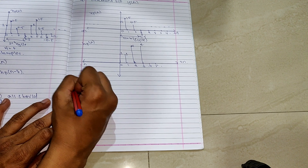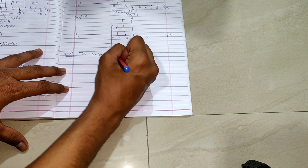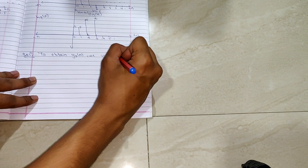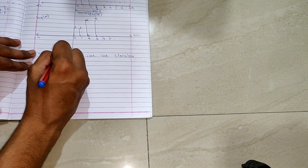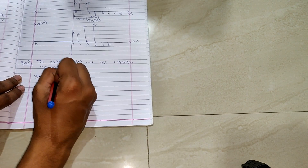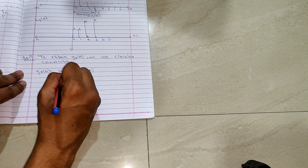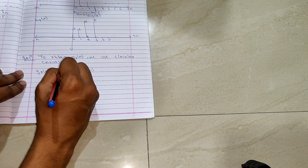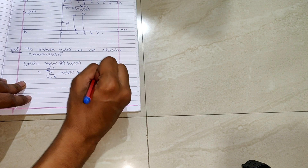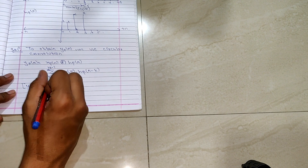Now let's start the solution. To obtain y of p of n, we use circular convolution. y of p of n is defined as x of p of n convolved with h of p of n, which in turn is given by the summation from k equals 0 to N minus 1 of x of p of k times h of p of n minus k. You can do this using a matrix method.